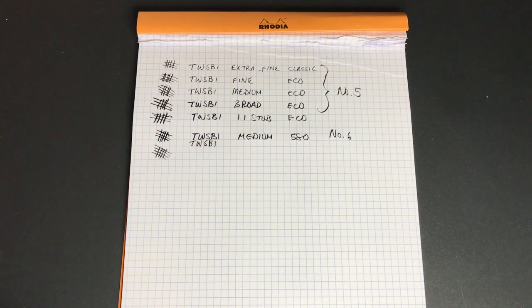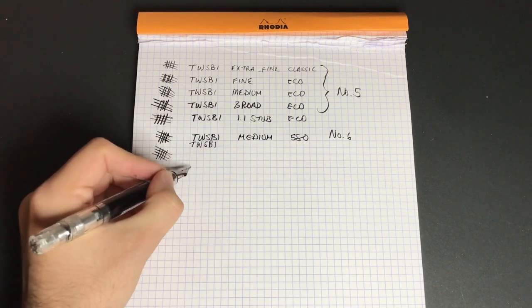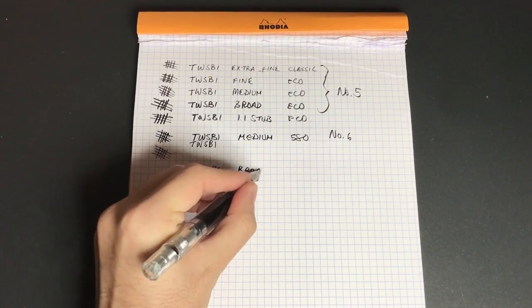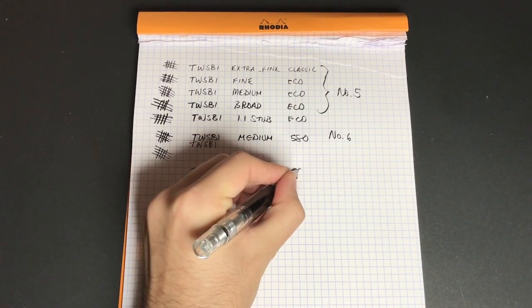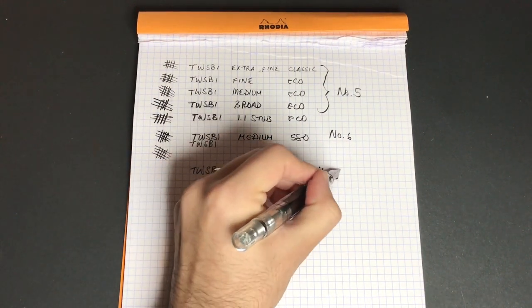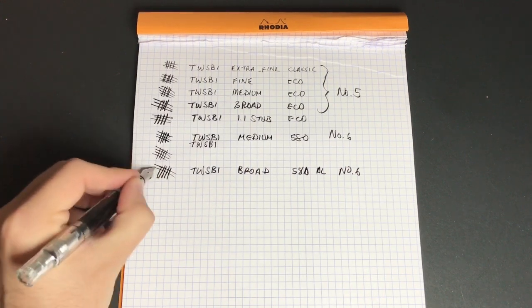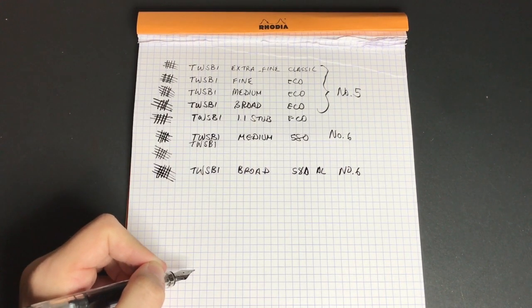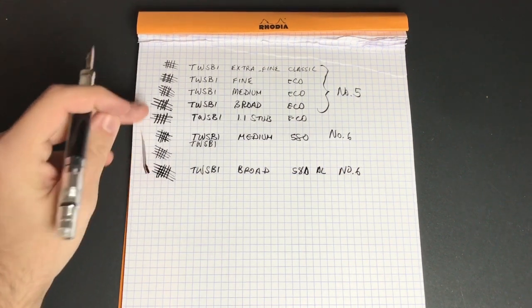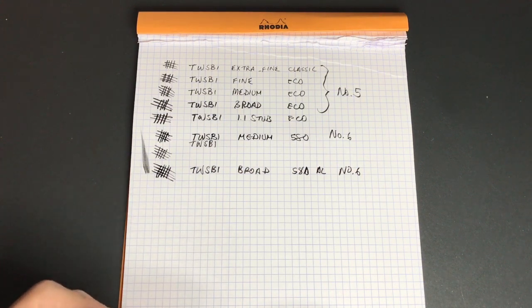Now if we look at the broad nibs from the number six. This is a 580, that's an AL, and once again this is a number six nib. So this nib is wonderfully smooth, generous flow, very very wet. Like we're talking really a very wet pen here. It's lovely to write with. It's got a lovely sort of, yeah, lovely sort of broad tipping on it and it's a very very pleasant pen to write with.